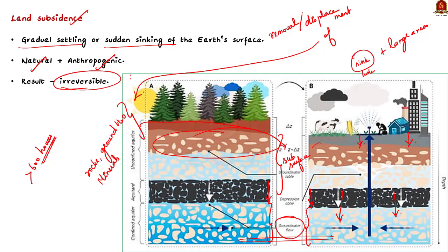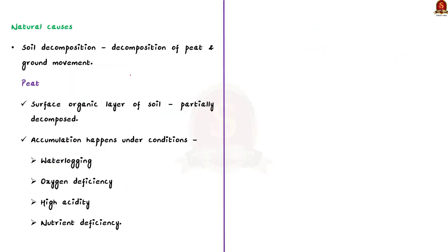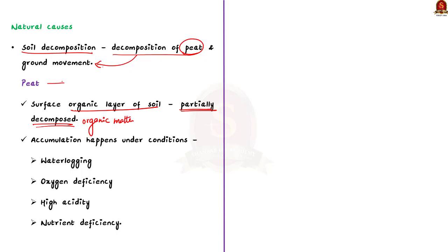Now we will see the causes of land subsidence, starting with natural causes. First, land subsidence is caused due to soil decomposition. Some natural soils like peat can decompose over time and this causes ground movement. Peat is the surface organic layer of a soil that consists of partially decomposed organic matter, derived mostly from plant material accumulated under conditions of water logging, oxygen deficiency, high acidity and nutrient deficiency. As peat decomposes fully over time, it leads to ground movement and land subsidence.